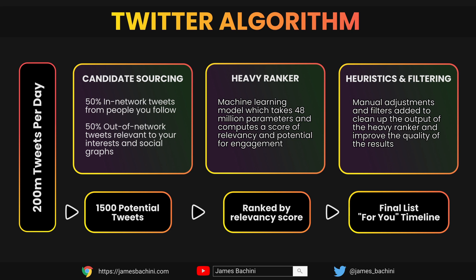The heavy ranker is a large neural network-based algorithm with approximately 48 million parameters, used to score the candidate tweets passed to it from the candidate sourcing process. The heavy ranker's job is to rank these tweets based on the number of likes, replies, the author's credibility within the industry the tweet is coming from, and its relevancy to you. It uses all these numerical data points to create a list of which tweets should be most prominent in the For You timeline.